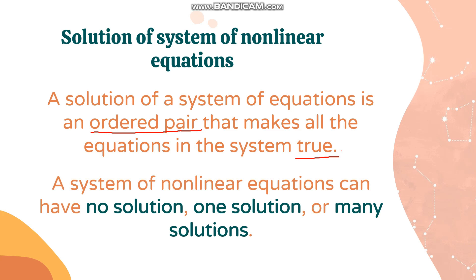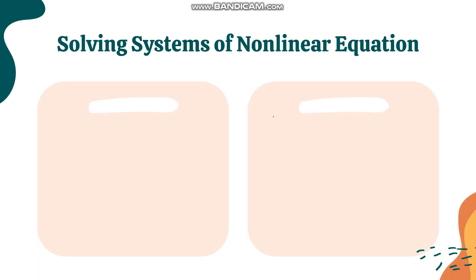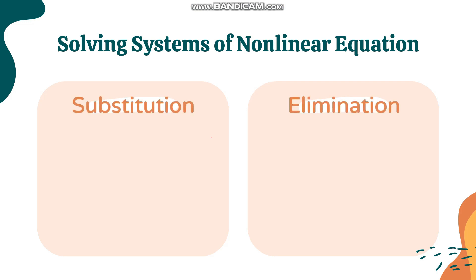A system of nonlinear equations can have no solution, one solution, or many solutions — it depends on the equations given. If there is no solution, the graphs of the two equations do not intersect. One solution means the graphs intersect once, and many solutions means they intersect at more than one point.